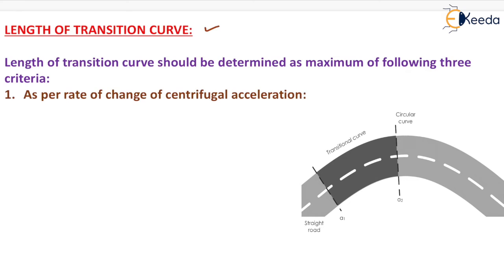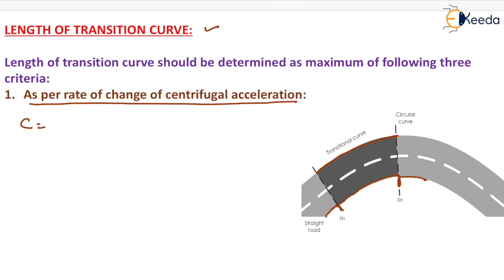We have to find the length of transition curve, determined from three criteria. The first is as per the rate of change of centrifugal acceleration. A straight road and a circular curve are shown, with a transition curve provided in between. Here the acceleration is A1 and at the circular curve the acceleration is A2. The rate of change of centrifugal acceleration equals A2 minus A1 divided by time. Since centrifugal force P = ma and also P = mv²/R, we get acceleration A = v²/R.